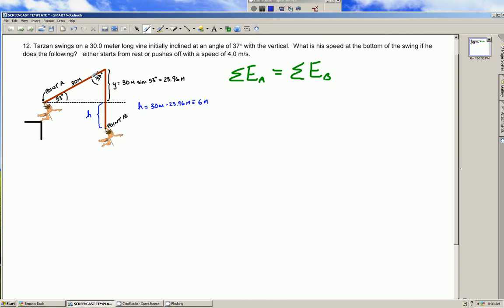And looking at a little right triangle trigonometry here, we know that the hypotenuse of this scenario here is 30 meters, that's the length of the rope, the length of the vine. And swinging down here to point B, we can determine this dimension H, which is the difference between 30 meters and this dimension Y, which is the opposite side of this right triangle. And I've calculated this to be 30 meters times the sine of 53 degrees, the opposite side, which is equal to about 23.96 meters, yielding H equaling 30 meters minus this dimension, or 6 meters.